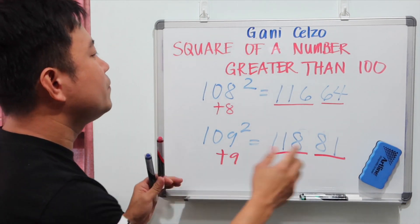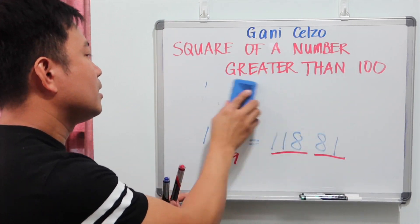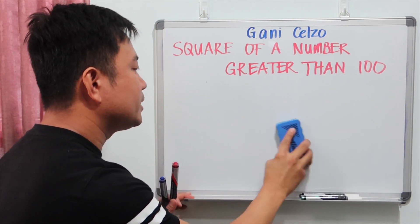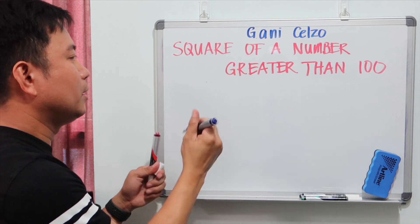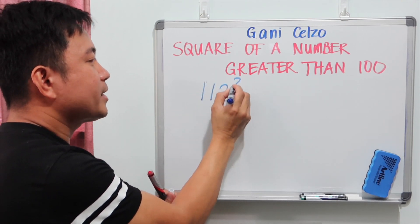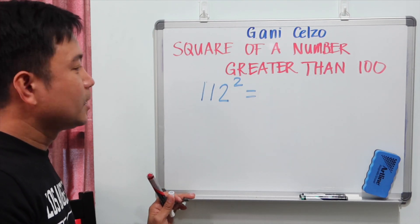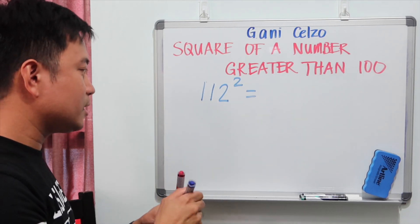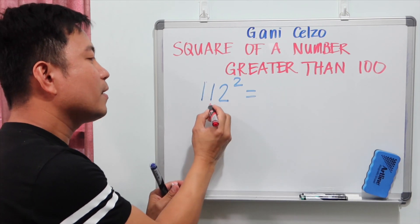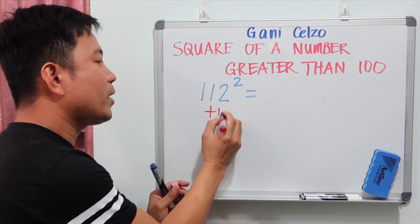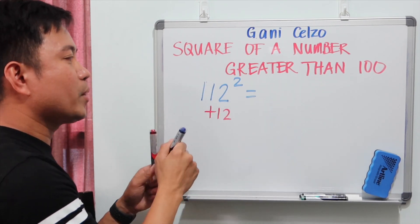What about if we have numbers that are more than 110? For example, 112 to the second power. So the same concept, this is 12 more than 100, so I need to add 12, which is 124.